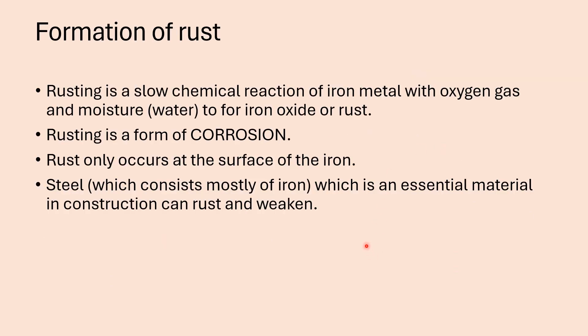Lastly, we also have to look at the formation of rust. Rusting is not a combustion reaction, but it's a slow chemical reaction of iron metal with oxygen gas and moisture — water — to form iron oxide or rust. Rusting is a form of corrosion, meaning that the metal is weakened through the rusting process — it eats the metal away. Rusting only occurs at the surface of the iron.